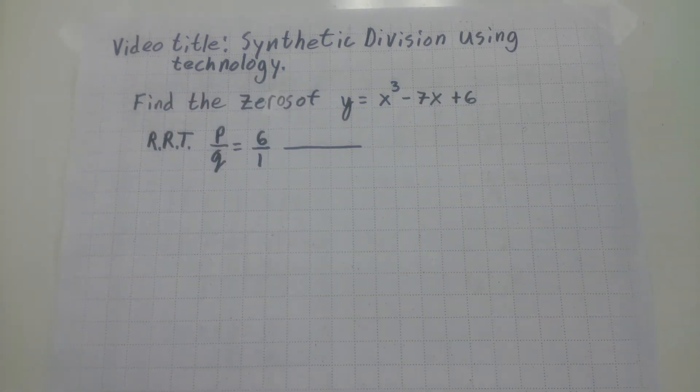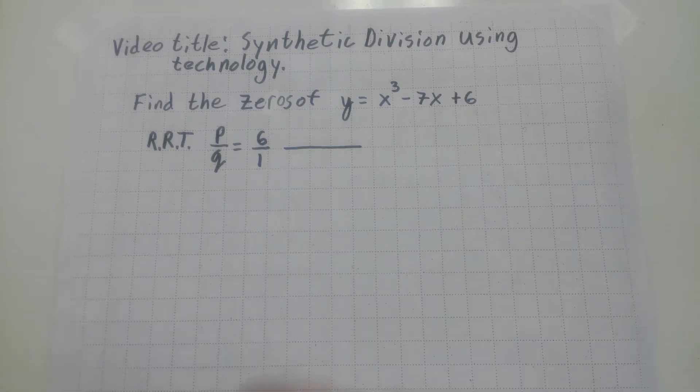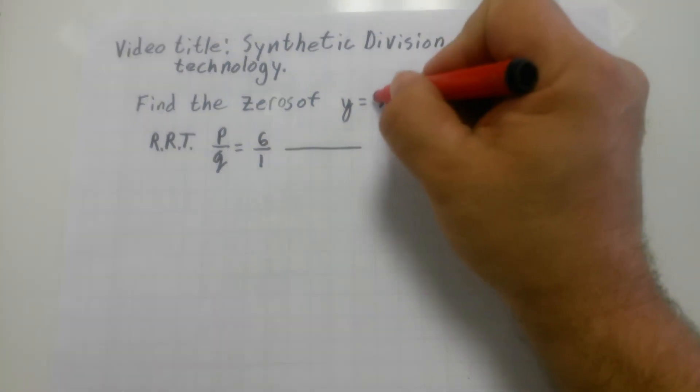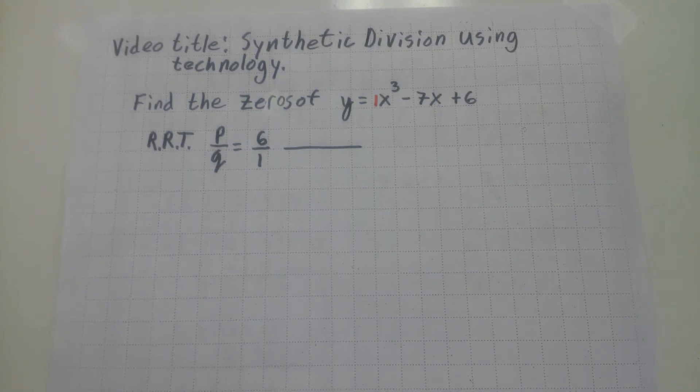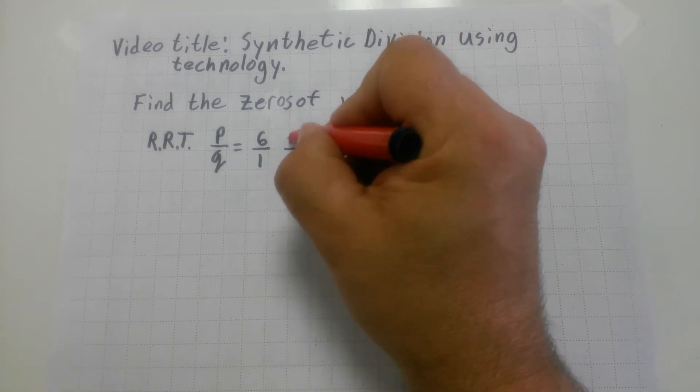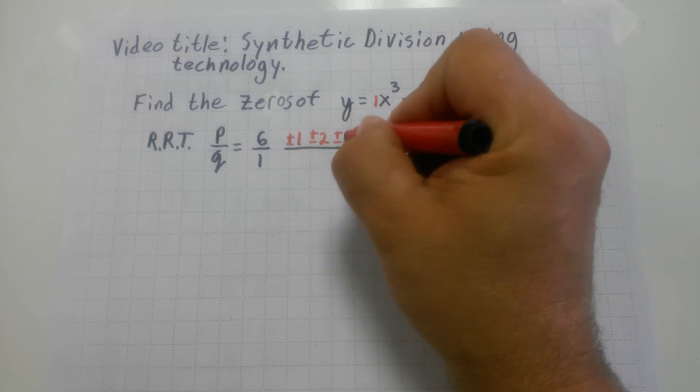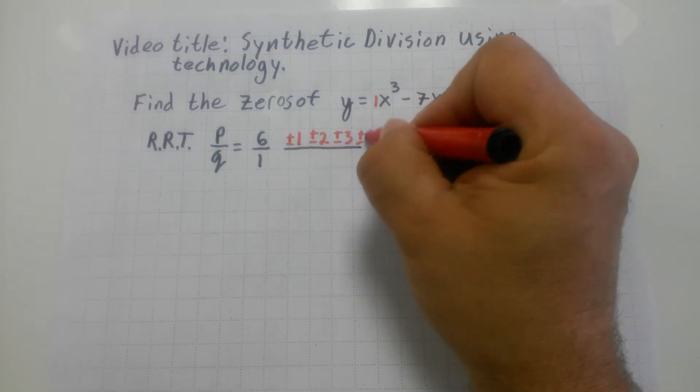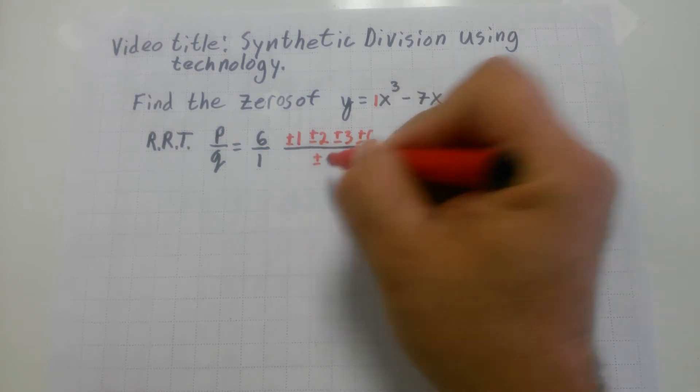First thing you want to do is set up your rational root theorem, which is P over Q. P is going to be the back number six. Q is going to be the front number one. I haven't used any really difficult problems. These are all factorable polynomials. So the factors of six are going to be plus minus one, plus minus two, plus minus three, and plus minus six, all over the factors of one, which is kind of simple, just plus minus one.